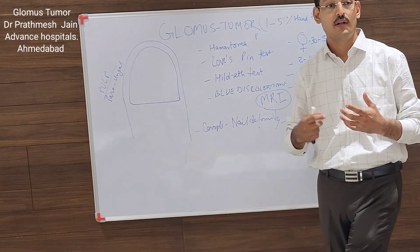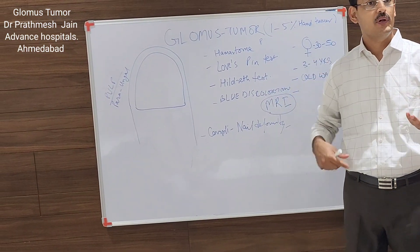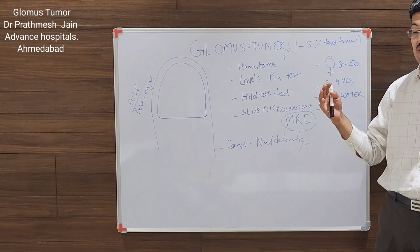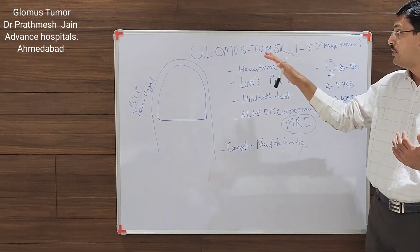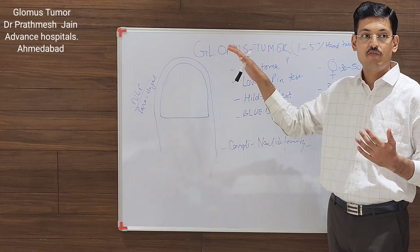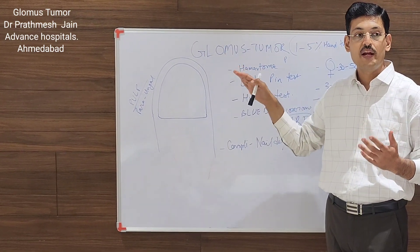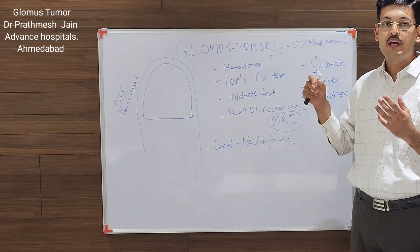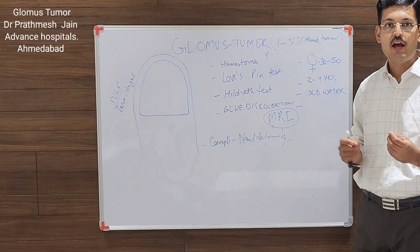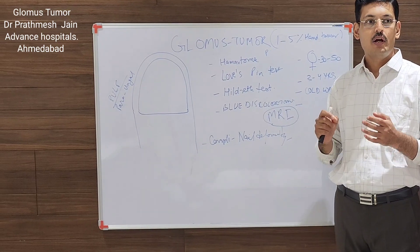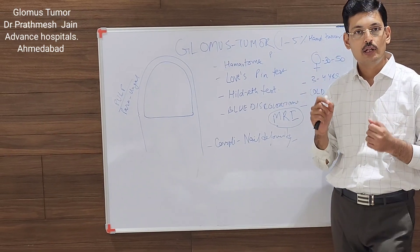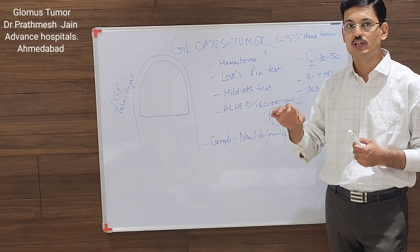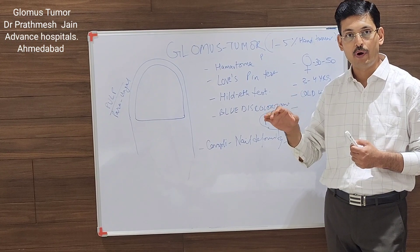With the clinical judgment, the patient will keep coming to the doctor, the doctor will write some medications and send them away. So the diagnosis has to be made with a very high clinical suspicion. The patient will have hyperesthesia at a particular point and intense pain on touching that point.